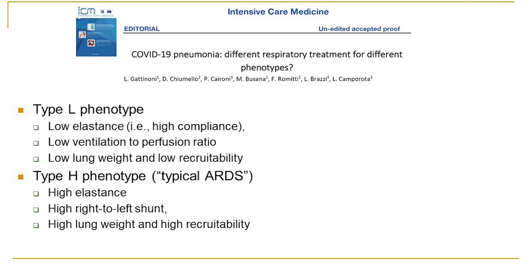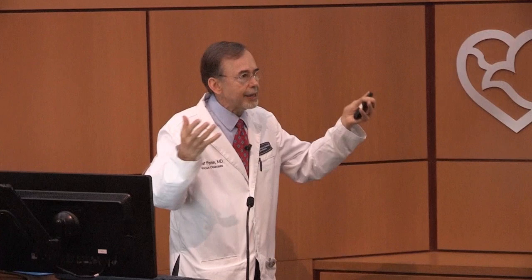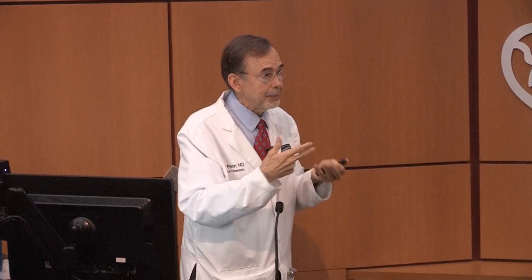In the Type L phenotype, by increasing oxygen they could sometimes quickly reverse the hypoxemia due to diffusion abnormalities. In typical ARDS, higher pressures were often required to push fluid out. Patients are not doing as well on the ventilator, and there are many details behind that. Our pulmonologists are being challenged on how to address respiratory failure — whether to ventilate or not, the ventilator settings, and addressing these two different phenotypes of COVID-19 pneumonia.